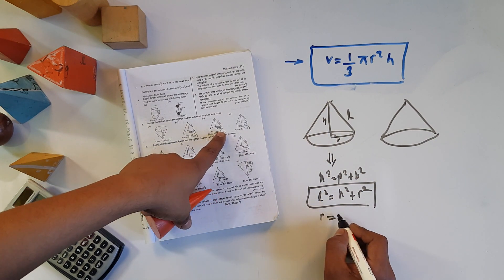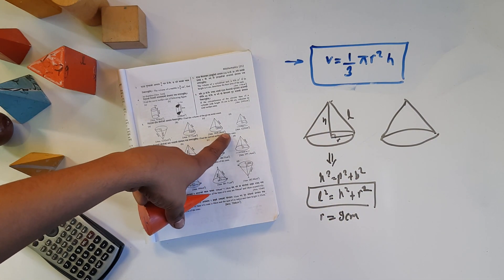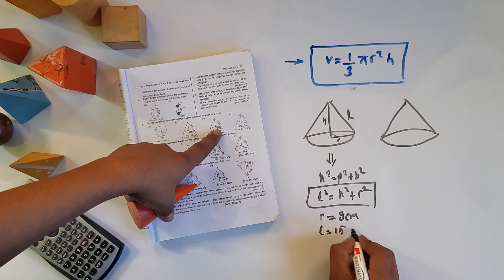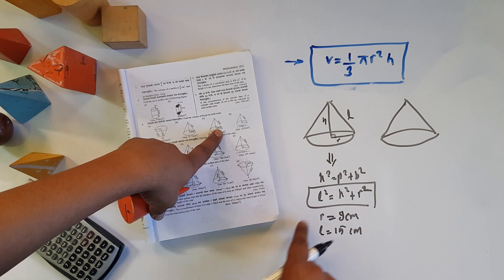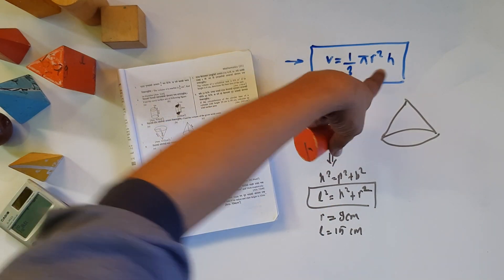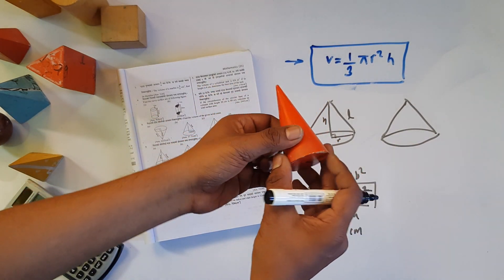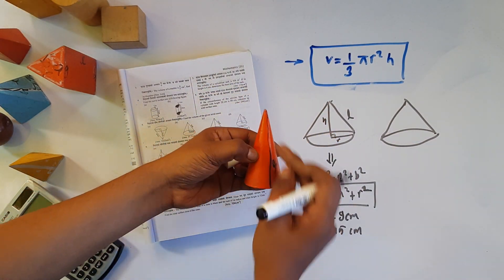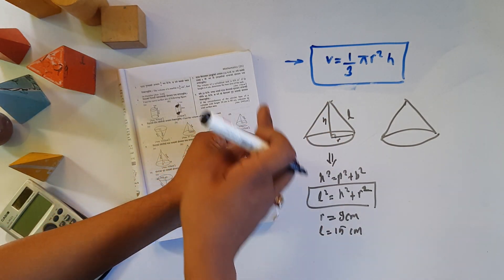For this question, R is equal to 9 cm and the slant height L is equal to 15 cm. We need to find H using the direct formula quickly. The shape gives us R, slant length L, and height H.